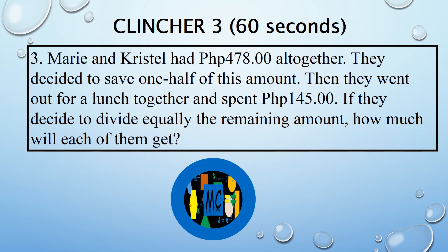3. Maria and Crystal had 478 pesos all together. They decided to save one half of this amount. Then they went out for lunch together and spent 145 pesos. If they decide to divide equally the remaining amount, how much will each of them get?